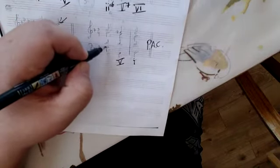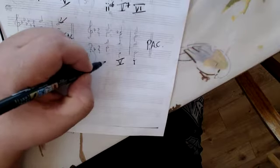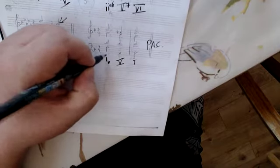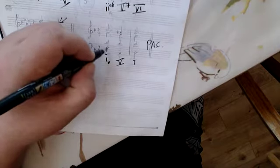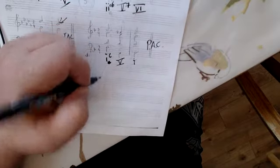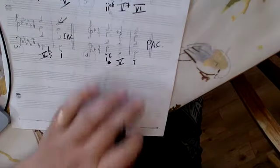This one right here is a D, F, A, D. So, this is a one chord. Oops. One right there. But the third's in the bass. So, there we go. Okay? And that's it right there.